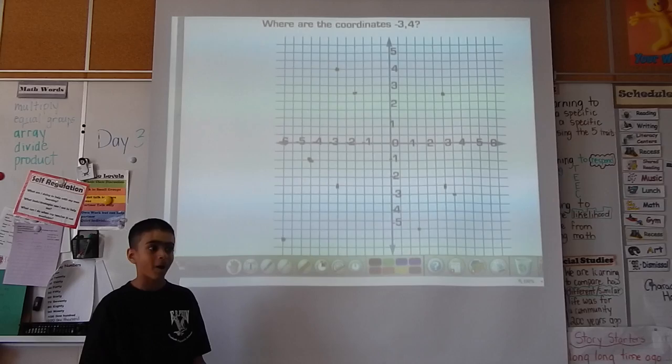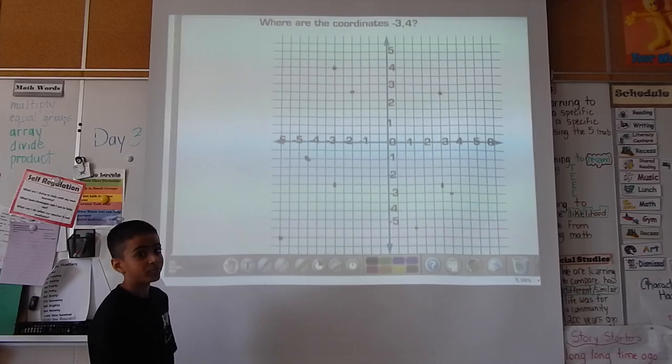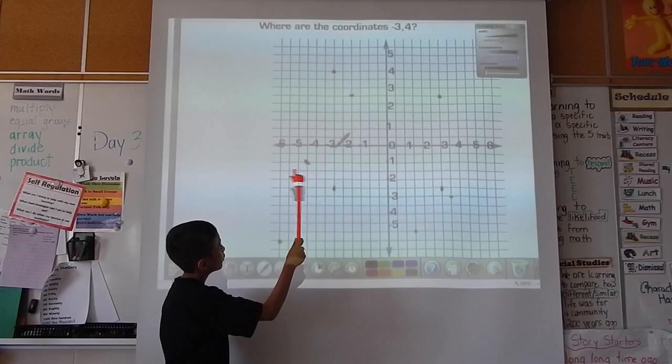So the first thing you do is look at the first number. That is going to be your horizontal number. So right now, it is negative three. So negative three is right here. So that means since it's horizontal, it would be on the vertical line of negative three.